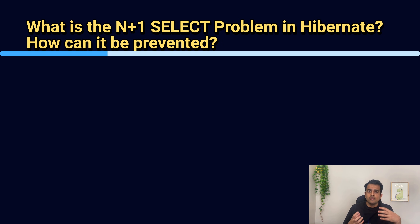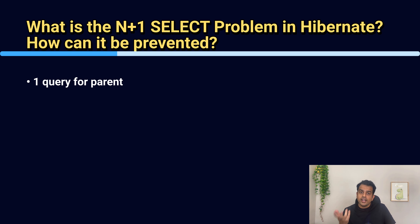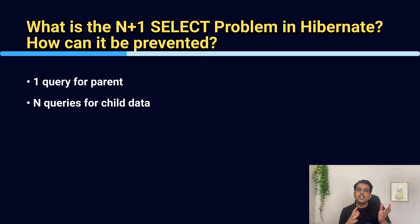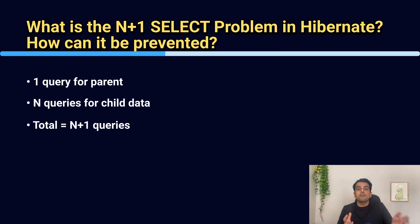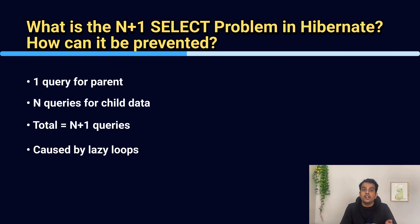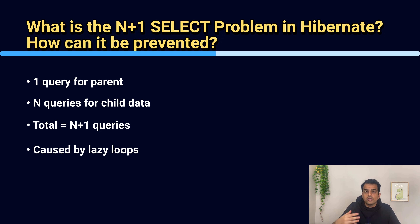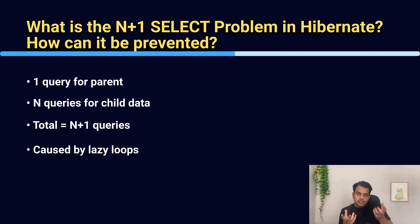This usually happens because of lazy loading combined with how we access the collection. For example, if the relationship is one-to-many and you are using fetch type LAZY, Hibernate only loads departments initially, and when we iterate and call getEmployees, it has to go to the DB again for each department. If we repeat this inside a loop, it causes the N+1 problem. Lazy loading is not a bad thing, but iterating inside a loop hits this issue. You can detect the N+1 problem by checking logs for too many small SELECT statements — the same query repeating multiple times with just a difference in ID, and the application becoming slow as list size increases.